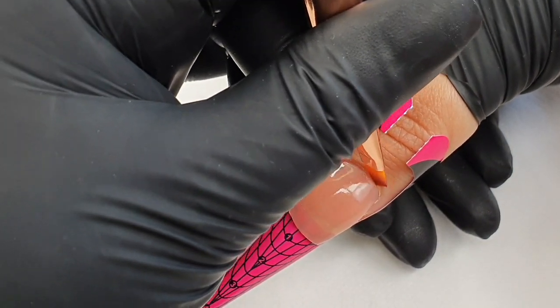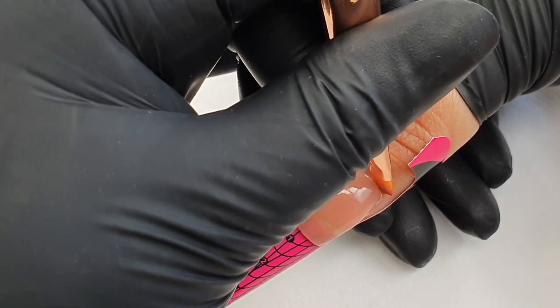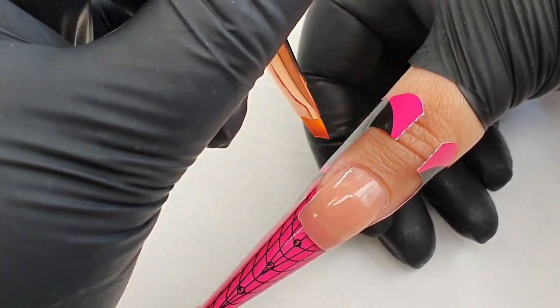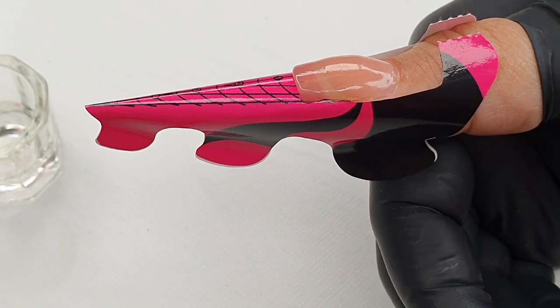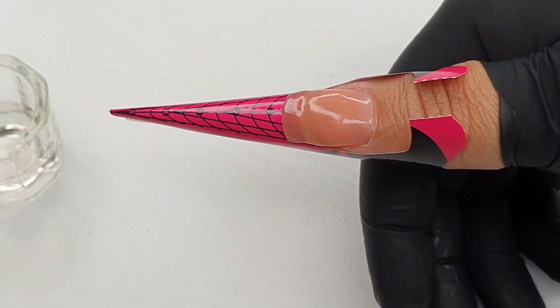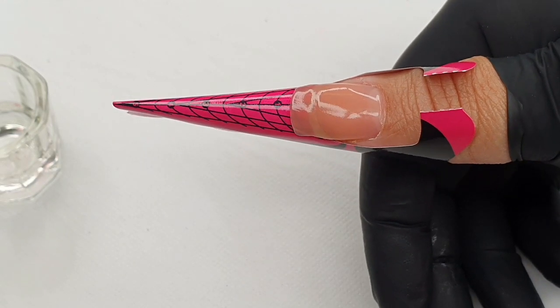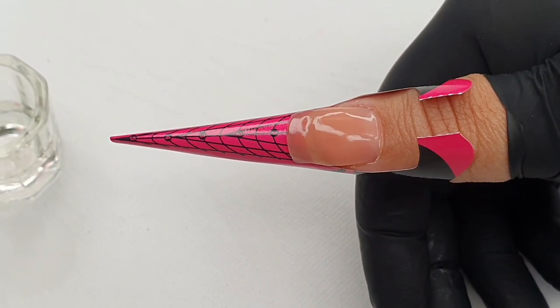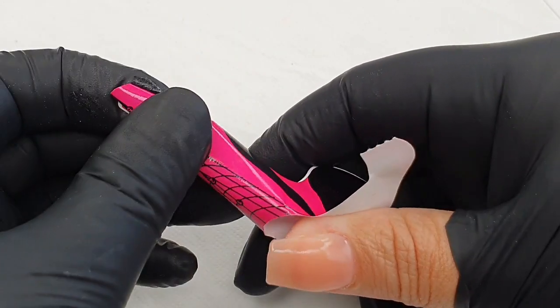I can go back and clean off the free edge line. I'm making sure my cuticle has no product attached to it. I really can take my time, which is something you can't do when you work with acrylic. You need to be faster with acrylic products. This is the great thing about infinity.